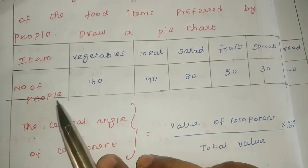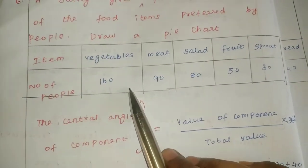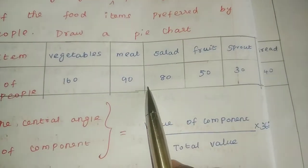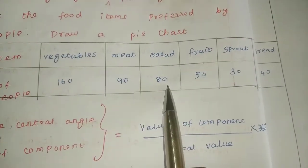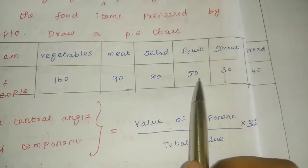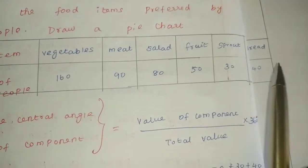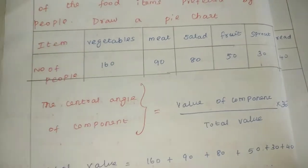The number of people for each item are: 160, 90, 80, 50, 30, and 40.